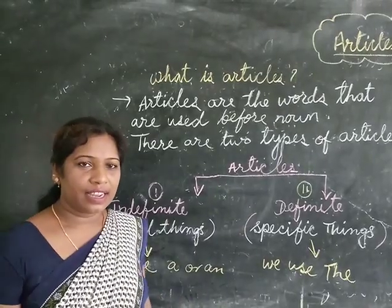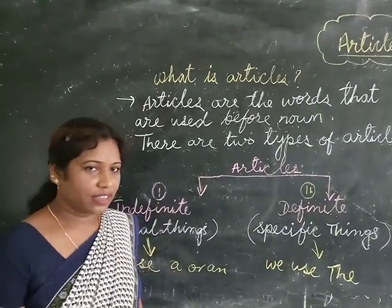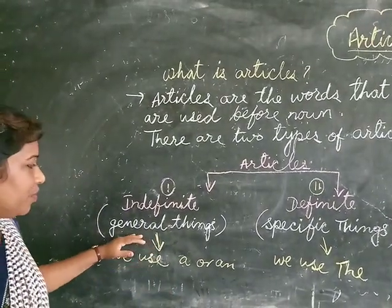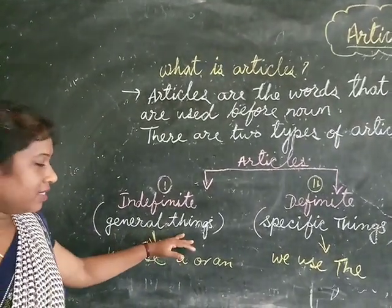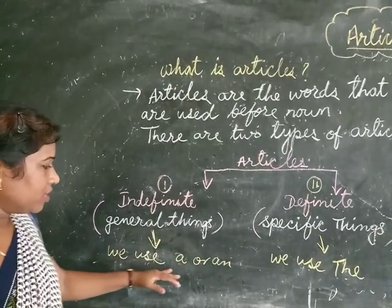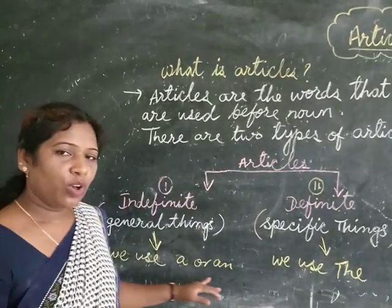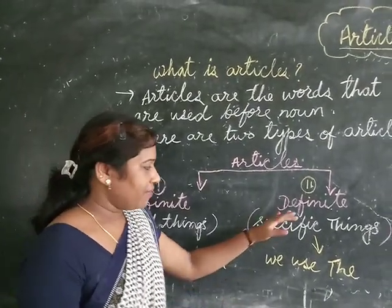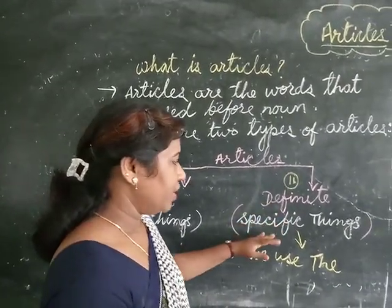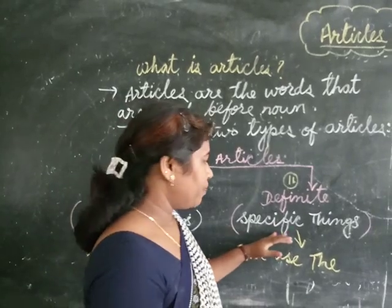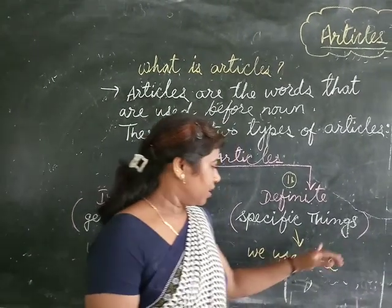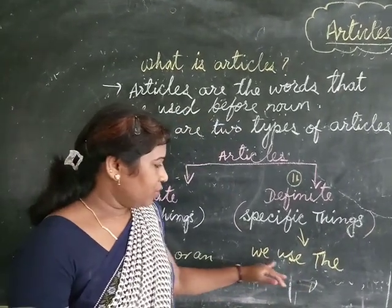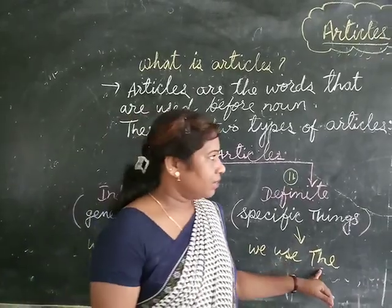Definite and indefinite. Indefinite articles are used for general things — we use 'a' or 'an.' For definite articles, we use them for specific things — we use 'the.'